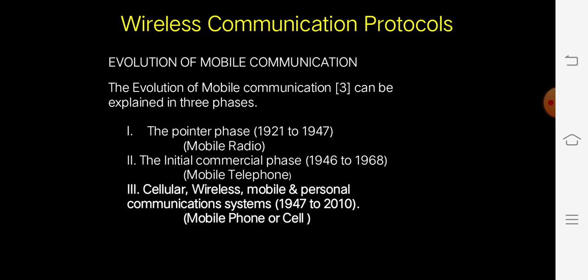The evolution of mobile communication can be explained in three phases. The first is the pioneer phase, with a duration of 1921 to 1947. During that period, mobile radios were invented and developed. The next one is the initial commercial phase, with a duration of 1946 to 1968. During that period, the mobile telephone was invented and introduced.